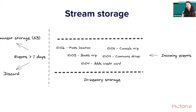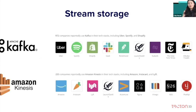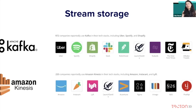One way to do it is to store all those recent features in memory. Every time something happens — like a user books a trip, adds a credit card, contacts a driver, or cancels a trip — you store those events in memory. After seven or ten days, once an event is no longer useful, you can either discard it or move it to permanent storage like S3. This is essentially what a stream storage solution is. The most popular solutions are Apache Kafka and Amazon Kinesis, and on Stackshare you can see hundreds of companies using these solutions.